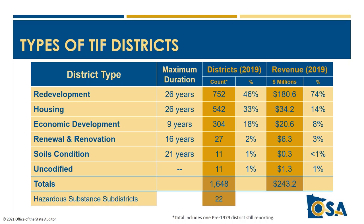Redevelopment districts, which have blight tests, and housing districts, which have income limits, can collect increment for 26 years. Supporting broader economic development purposes is a debatable policy subject, so economic development districts are limited to nine years of increment and limited to certain sectors like manufacturing. They can only support retail under certain small city exceptions. Renewal and renovation districts have a blight test focused on undesirable land use conditions and are limited to 16 years, while soils condition districts for pollutant remediation can collect increment for 21 years.